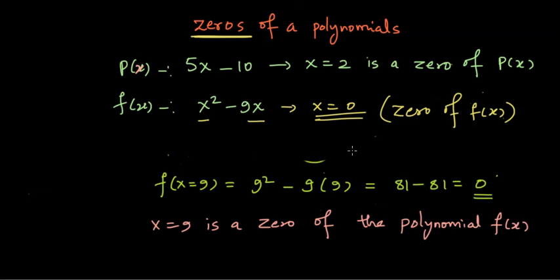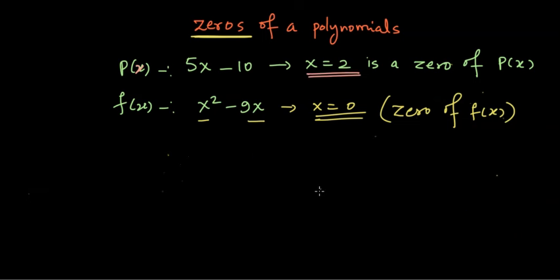Now did we notice something? For the first polynomial, x equal to 2 was a zero, and in here x equal to 0 and x equal to 9 both are zeros of f(x). Now number of zeros of a given polynomial depend upon the degree of the polynomial. Remember that here the degree is 1 and here the degree is 2. So this is an interesting result that you need to remember, because the degree is 2 here we should ideally be getting two zeros.